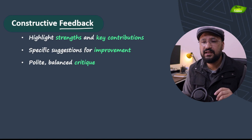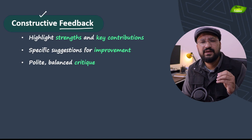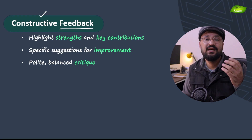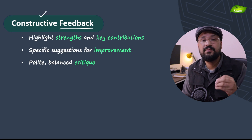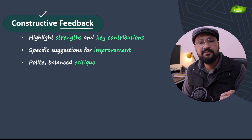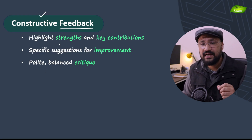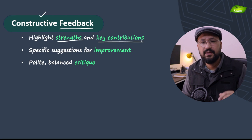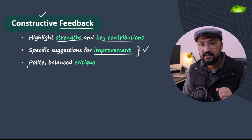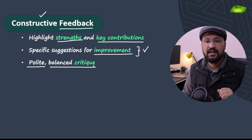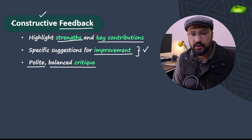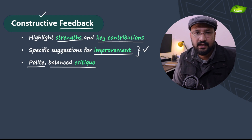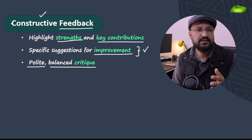The important point is that whenever you give feedback, it should be constructive — it should not be discouraging to the authors. You should provide constructive feedback that will improve the quality of the manuscript, enhance the clarity, and you can suggest experiments that will help the authors improve the manuscript. Constructive feedback is very important when providing comments to the author. You can also highlight the strengths of the paper, mention the limitations, and the key contribution of that particular paper to the field. It's good to have a polite as well as balanced critique — highlight all the points, but provide the constructive feedback to the authors.